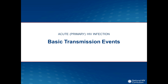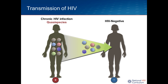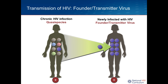The basic transmission events are very important for understanding the pathophysiology and prevention of HIV. When an individual living with HIV doesn't have suppressed HIV RNA levels, they have a quasi species of virus inside their body — multiple different strains of HIV. When a sexual exposure occurs, multiple quasi species are exposed to another individual, yet usually only one or two virions have the capable factors that lead to transmission. We call this the founder or transmitter virus.